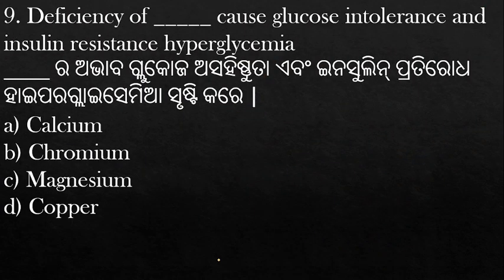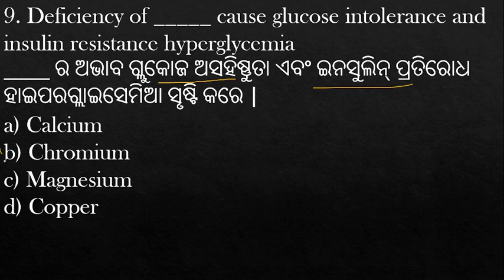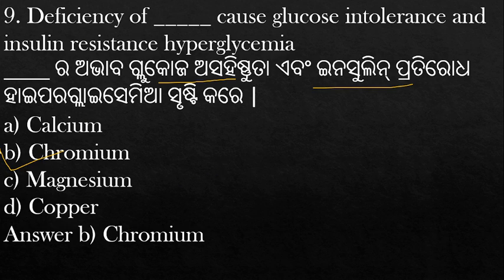Deficiency of which mineral causes glucose intolerance and insulin resistance — hyperglycemia? The options are calcium, chromium, and magnesium. The answer is chromium. Chromium deficiency leads to glucose intolerance, insulin resistance, and hyperglycemia.